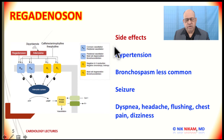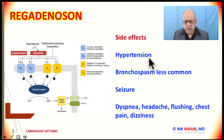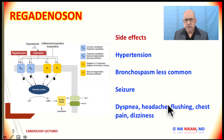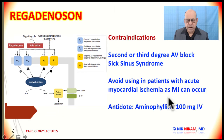Previously with adenosine we saw many symptoms related to slowing of the heart rate, drop in blood pressure, and bronchospasm. The majority of these symptoms are minimal with regadenosine. Hypertension may occasionally be seen. Bronchospasm is less common. Occasionally patients may have seizures. The most common symptoms include dyspnea, headache, flushing, chest pain, and dizziness. Since the effect lasts only 2 to 3 minutes, the majority of symptoms dissipate shortly after administration.